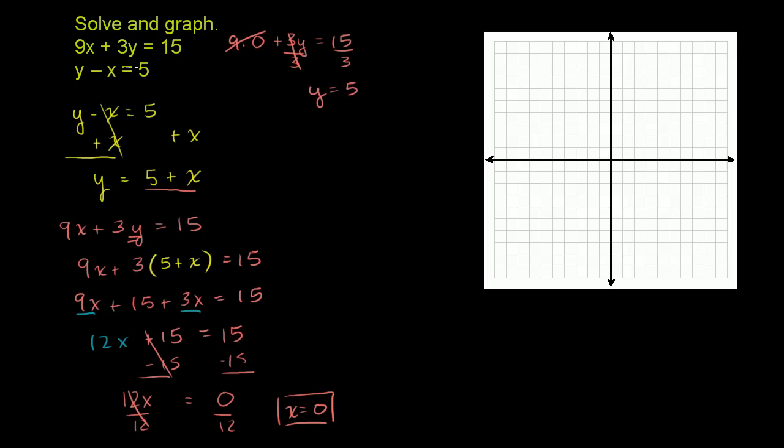And we can test that that also satisfies this equation. y, 5 minus 0, is also equal to 5. So the value x is equal to 0, y is equal to 5, satisfies both of these equations. So we've done the first part. Let's do the second part, where we're asked to graph it.